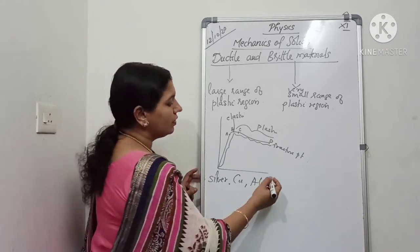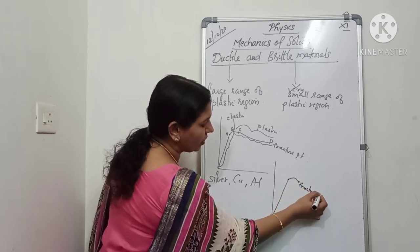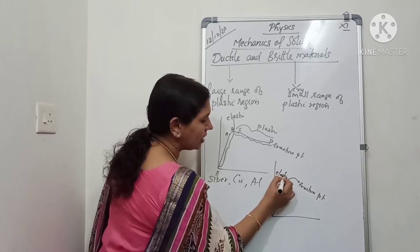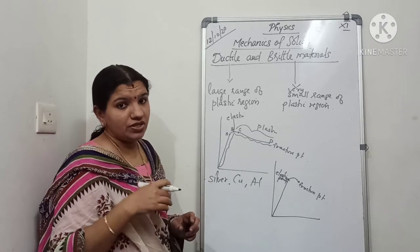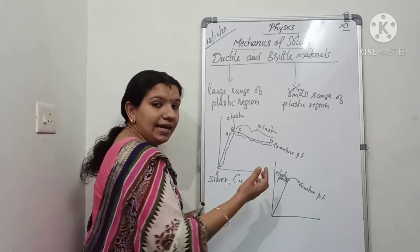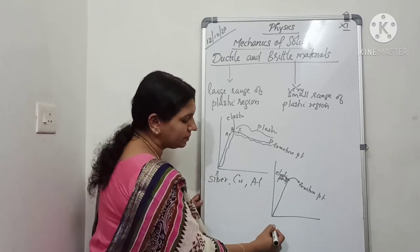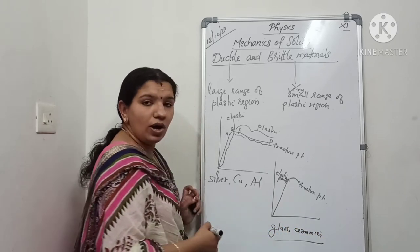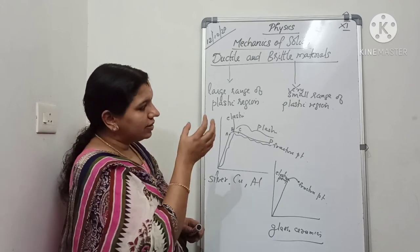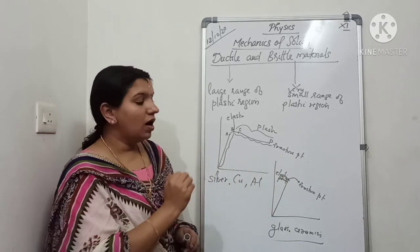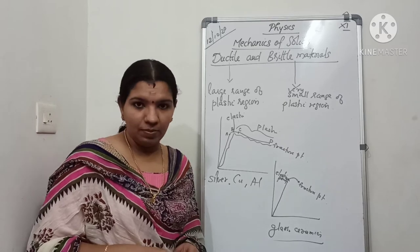In the case of brittle materials, the graph shows that from the elastic limit to the fracture point, there is only a very small region exhibiting plastic behavior. That means suddenly after attaining the elastic limit, it goes to the fracture point — the material breaks soon. Examples of brittle materials are glass and ceramics. These materials break easily. In terms of the stress-strain curve, brittle materials show a very small range of plastic behavior, and after the elastic point, they suddenly reach the fracture point.